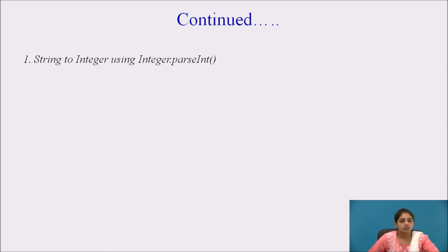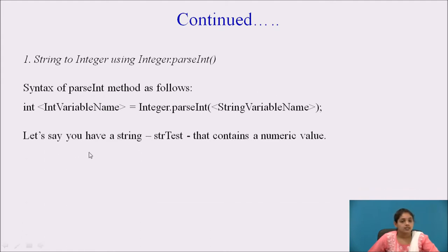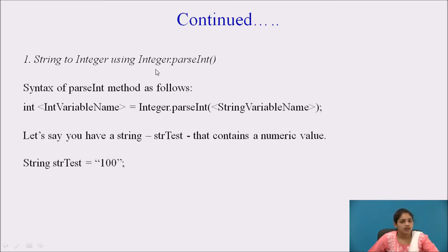First is string to integer using the Integer.parseInt() method. The syntax for this method is: you will require a second variable of integer type to store the converted integer — int variableName = Integer.parseInt(stringVariableName). For example, if you have a string variable str_test equal to '100', as a human eye when you see 100 it looks like a number, but it is in the form of a string and you cannot perform any arithmetic operation on it. You need to convert this 100, which is a string, into an integer using one of these methods.